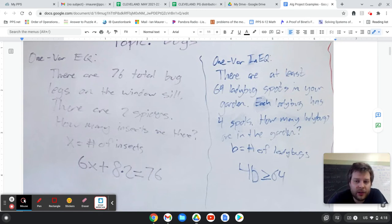My one variable inequality example was thinking about ladybug spots. Again, not a very exciting word problem, but we're saying that each ladybug has four spots and there's at least 64 ladybug spots. So because I use the word at least, that makes it into a greater than or equal to problem instead of just being strictly equals.